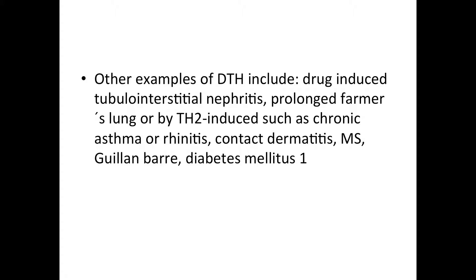Other types of delayed type hypersensitivity include drug-induced tubulointerstitial nephritis, from chronic use of different analgesics or antibiotics such as methicillin. It can also be caused by prolonged farmer's lung — that was a type 3 hypersensitivity caused by thermophilic actinomycetes or agricultural products. This can also include chronic asthma rhinitis, which is essentially TH2-induced — one of the exceptions in type 4 hypersensitivity where you will see TH2. Contact dermatitis is another example, usually associated with allergy to metals such as nickel or substances such as urushiol found in poison ivy and poison oak.